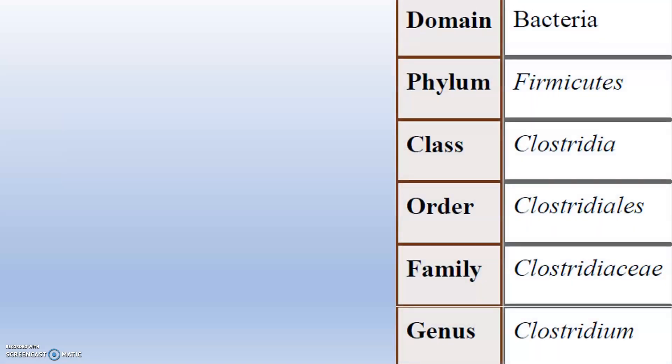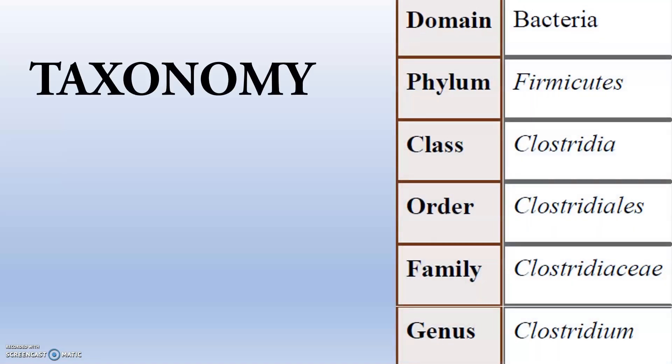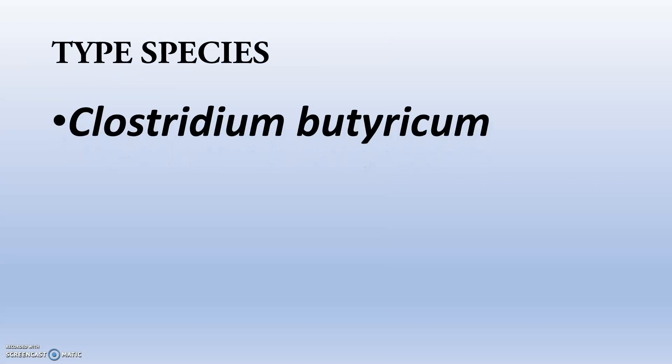This is the taxonomical part. They belong to the family Clostridiaceae and the phylum Firmicutes, and the genus is Clostridium. The type species — the species that shows all the properties belonging to the genus — is Clostridium butyricum. Keep this in mind: it is Clostridium butyricum.